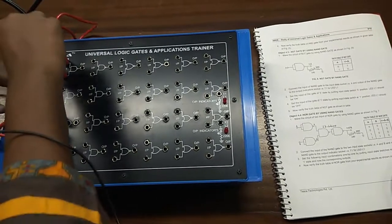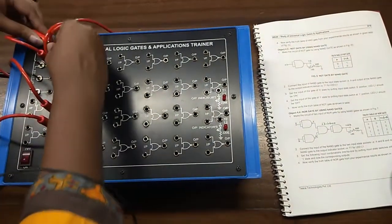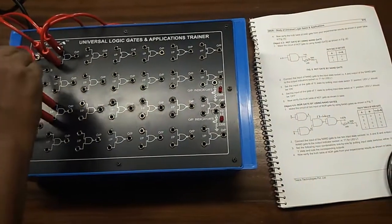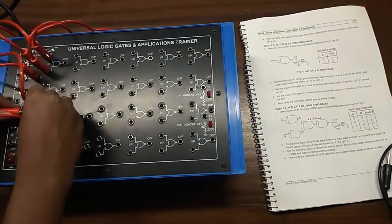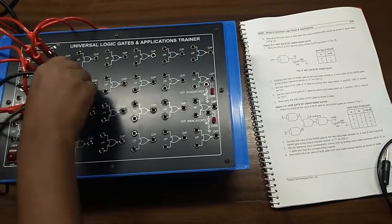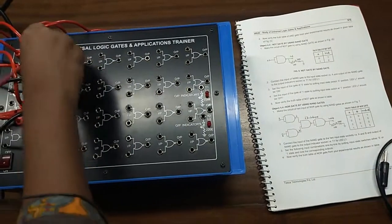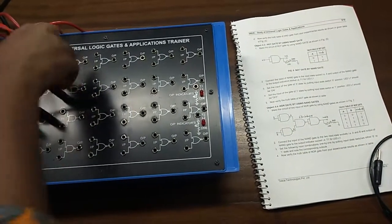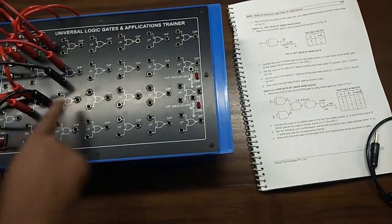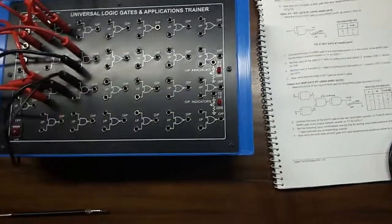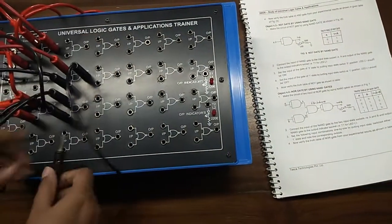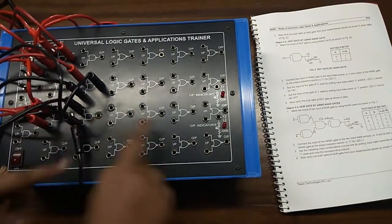Now I am giving input A here and input B to this one. This output will go to another input terminal of the NAND gate, and this output will go to the other input of the NAND gate. Now we need one more NAND gate — I am taking this one and shorting its two inputs. I am giving the output to the input here and connecting the output to the LED.